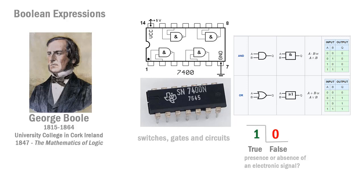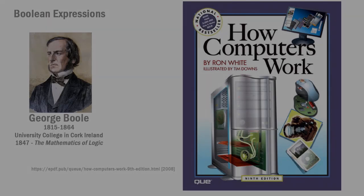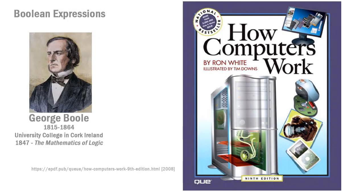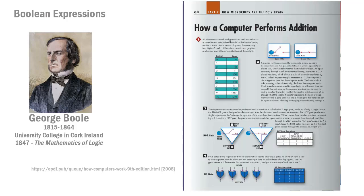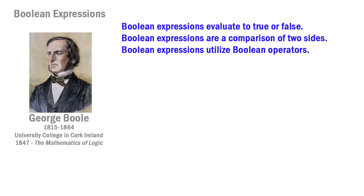Boolean expressions evaluate to either a true or false value, and we'll see in a bit that you can take a Boolean value and convert it to an integer — either one or zero in Python. There's a great little book on how computers work that goes into more detail on this; it's now available as a downloadable PDF at ePDF.pub. The book talks about gates and switches, how we write data to RAM, and how computers perform addition using transistors.